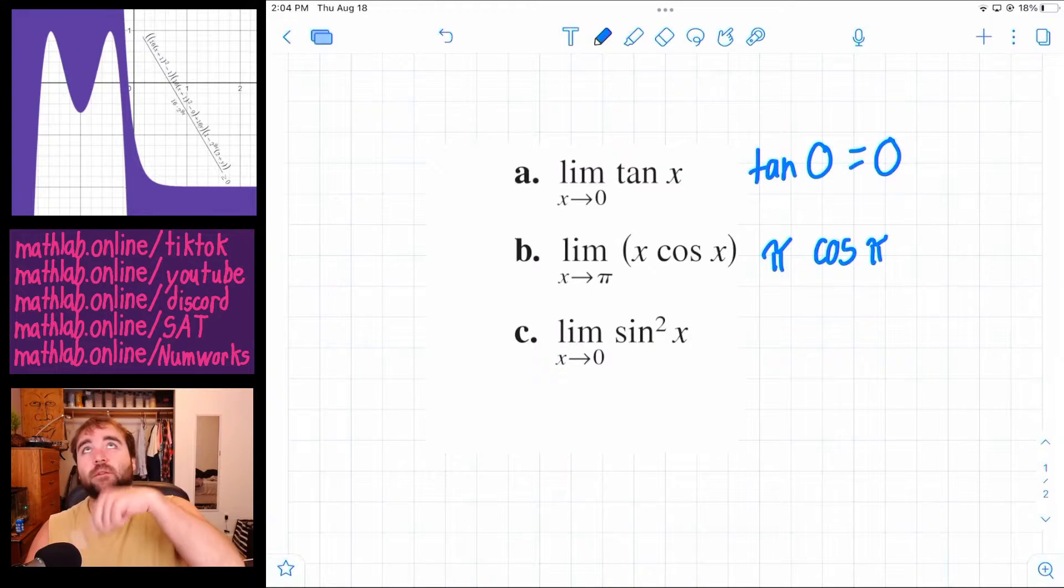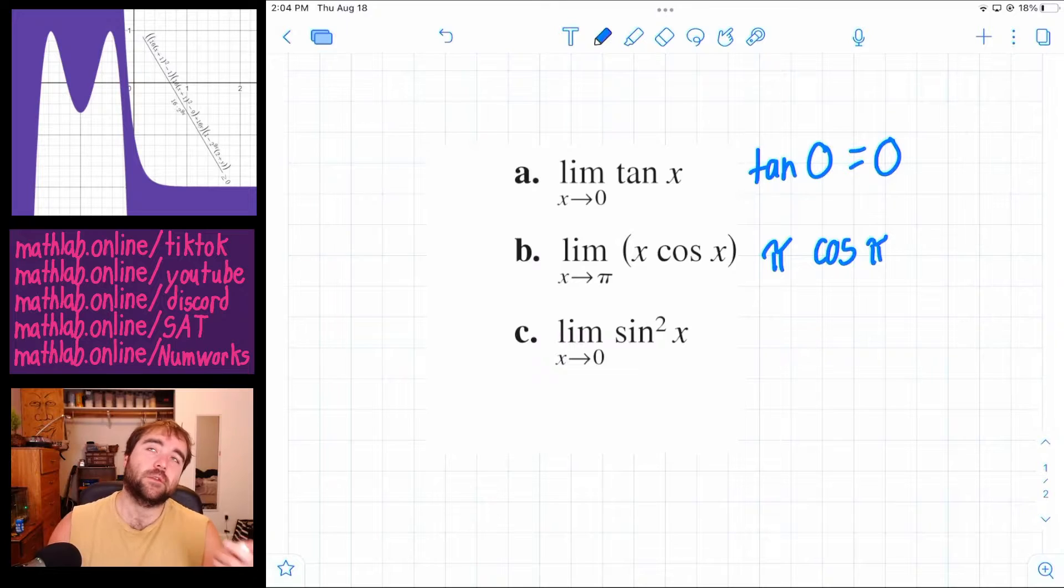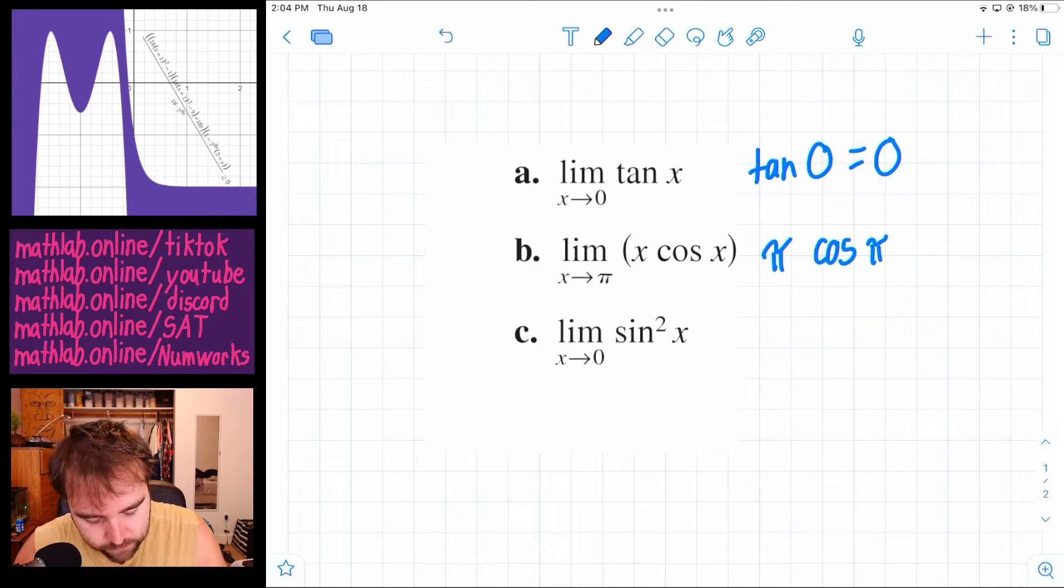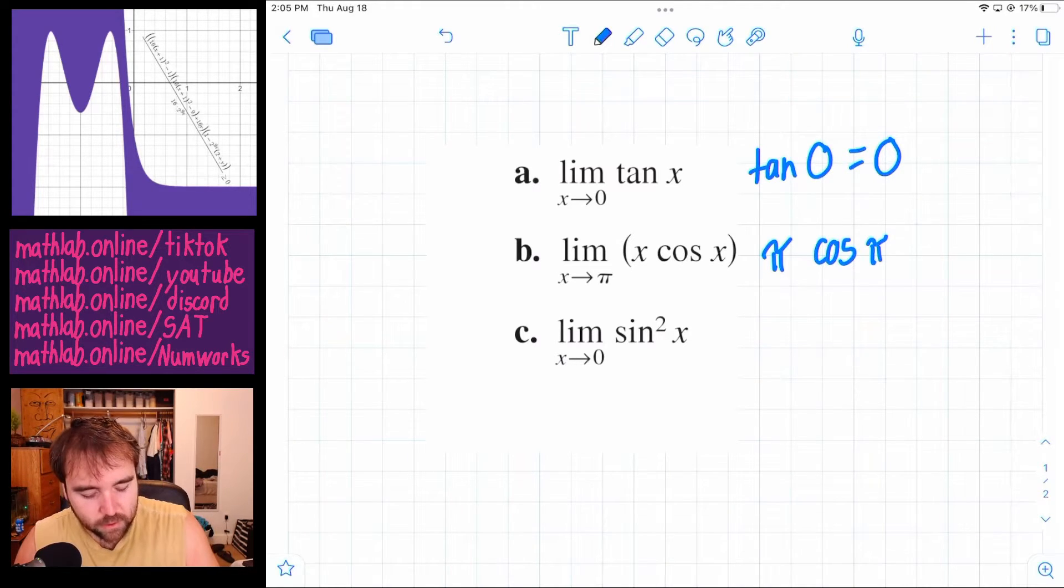The cosine of pi is halfway around, so it starts at 1. No, the cosine starts at 1, goes to 0, then to negative 1. So cosine is negative 1 at pi, so this is negative pi.